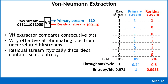The von Neumann extractor is effective at eliminating bias from an uncorrelated bit stream. It looks for transitions: a zero-to-one transition outputs a one, a one-to-zero transition outputs a zero, and consecutive identical bits are discarded. For a 10% bias input, the entropy per bit is 0.971, but after extraction the output bit stream is completely bias-free — entropy per bit of one — though throughput falls to 0.24.